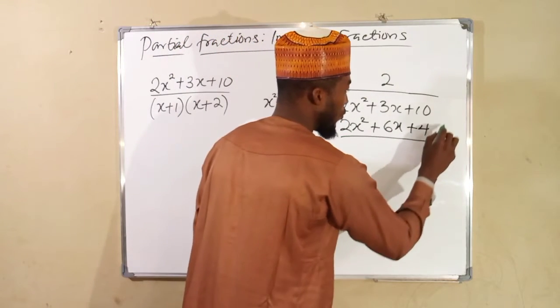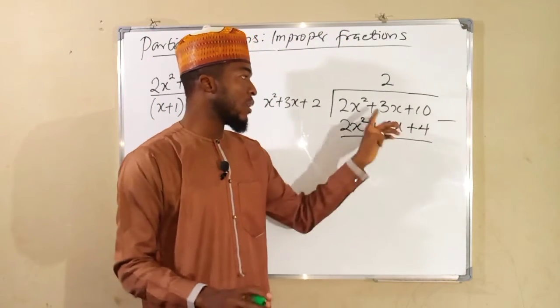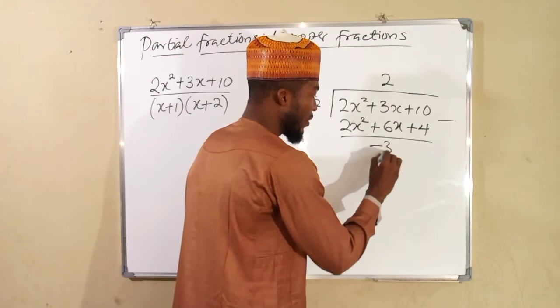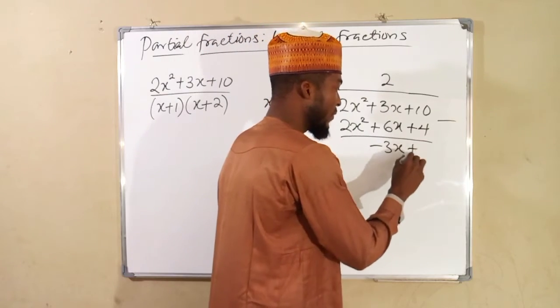What we are going to do, we are going to subtract. 2x squared minus 2x squared is 0. 3x minus 6x is negative 3x. Then 10 minus 4 is positive 6.